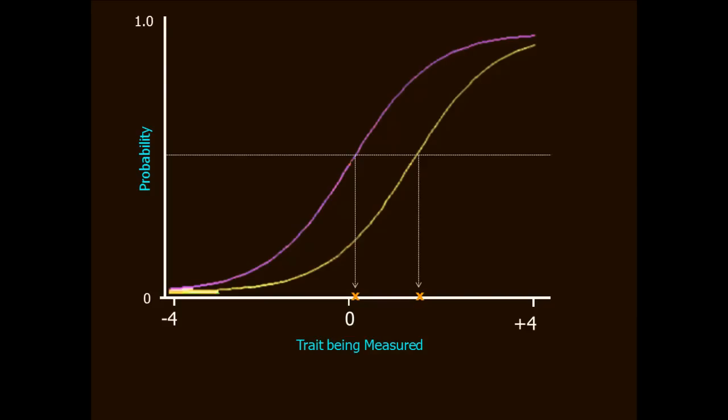But for the other item, the item represented by the yellow line, that doesn't happen until a good bit later. I have to have 1.5 logits of the trait being measured before that median probability is reached. Now, let's take a look at that other item characteristic called the item discrimination and see how it affects the shape of the trace line.